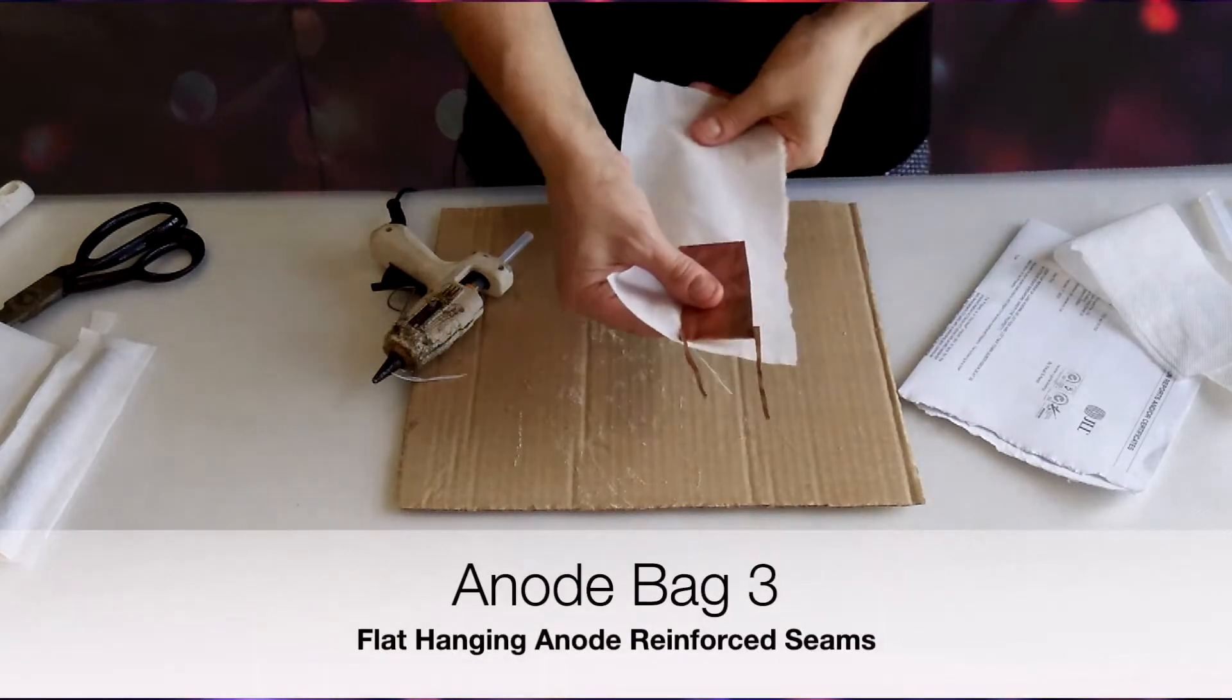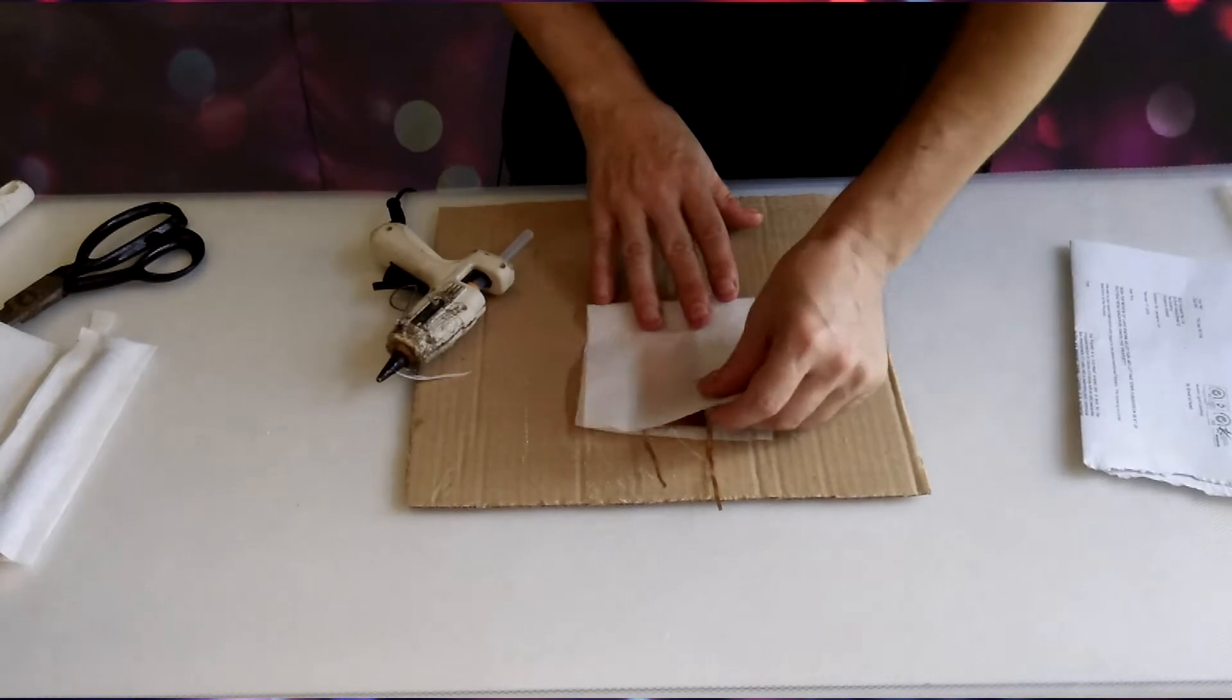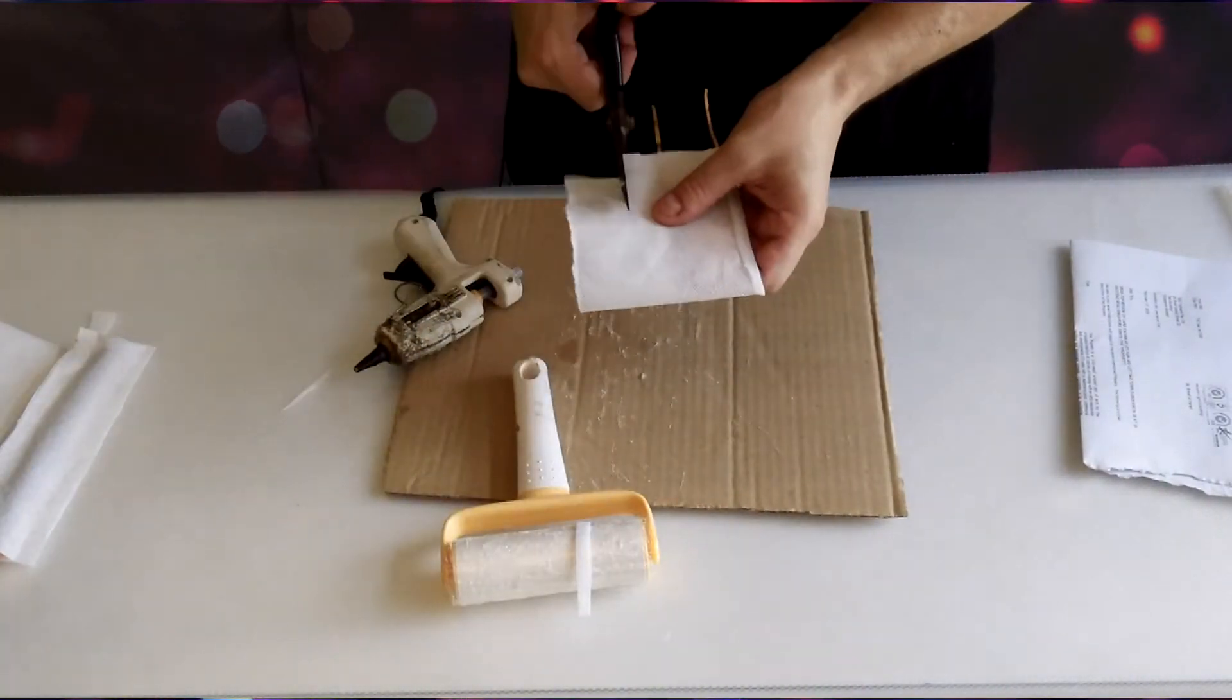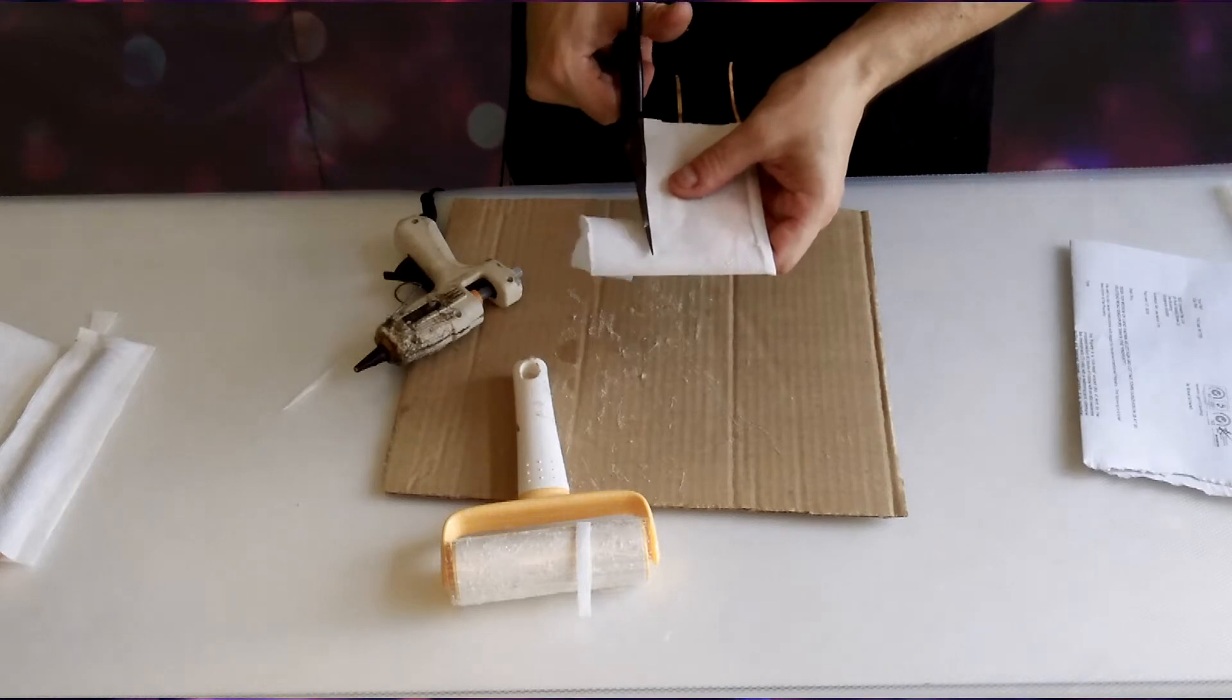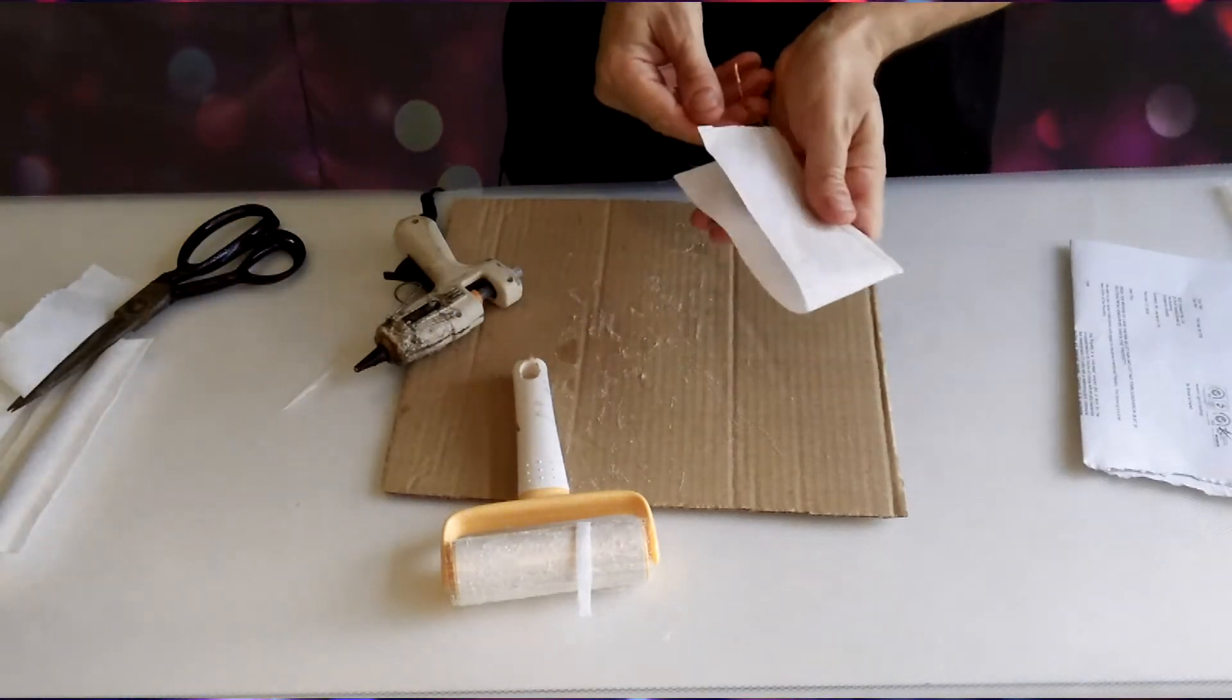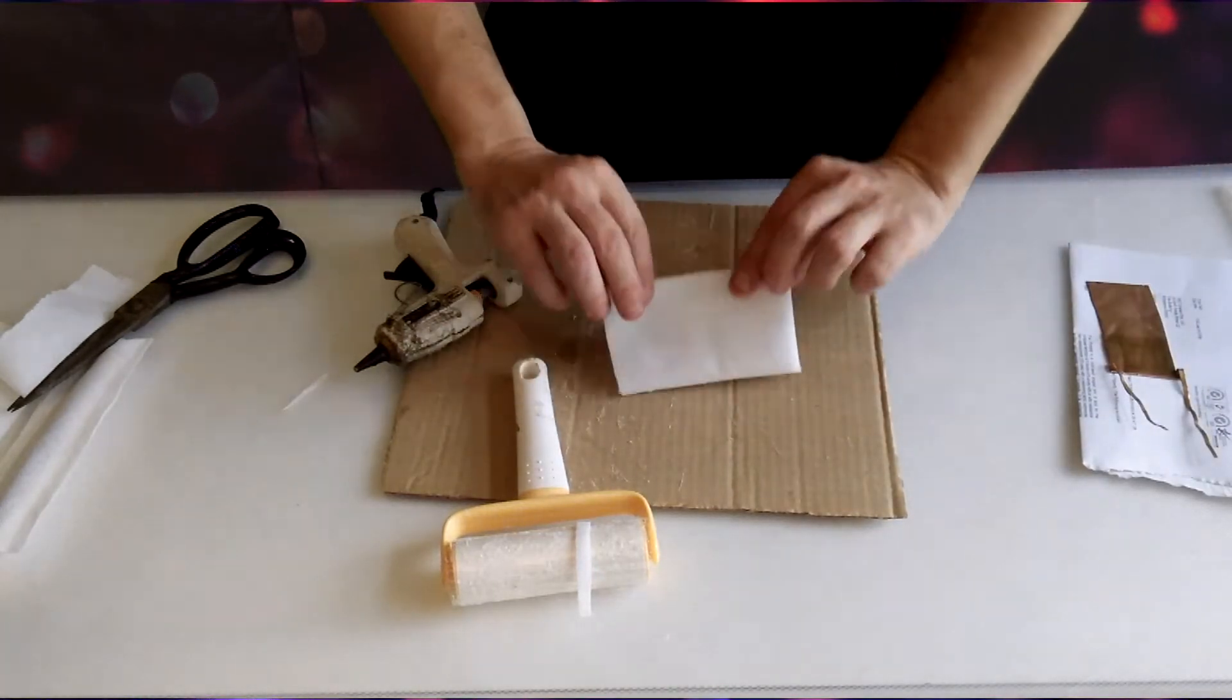Next one is for this hanging anode, and I have another video where I make these. Now I'm leaving a little extra room so I can adjust the height on this anode so I can go higher and lower. So I want the anode bag to be a little bit baggy.